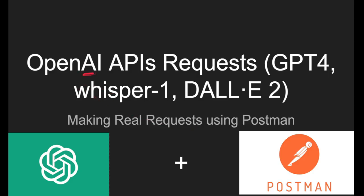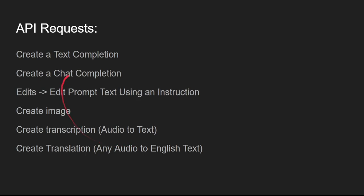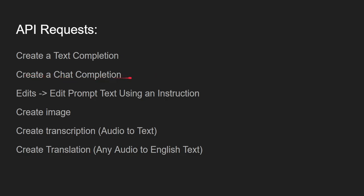In this video we're going to see how to make requests to OpenAI top APIs: GPT-4, Whisper-1, and DALL-E. Using Postman, we'll cover how to create a text completion, a chat completion using GPT-4, how to edit text to fix grammar, how to create an image using the API, how to create a transcription by sending audio or video converted to text, and how to create a translation from any language into English.